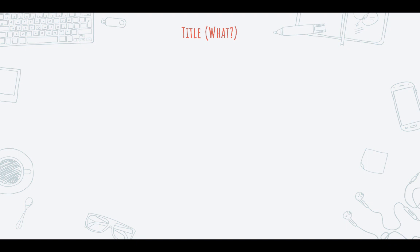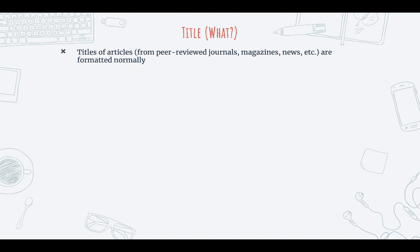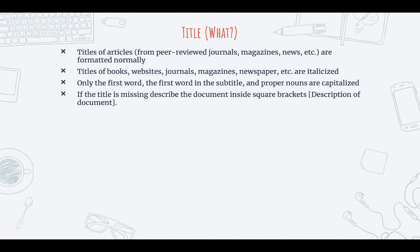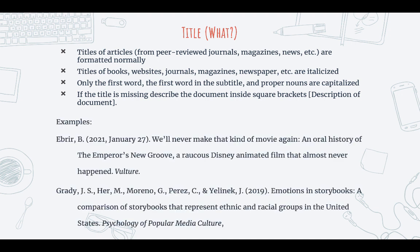For the next part of the citation we have the title. Titles of articles from peer-reviewed journals, magazines, news, etc. are formatted normally. Titles of books, websites, journals, magazines, newspapers, etc. are italicized. Only the first word, the first word in the subtitle, and proper nouns are capitalized. If the title is missing, describe the document inside square brackets. Here are examples of how to format titles from the website article. You can see the title of the article itself is formatted like a sentence, and the name of the website — Vulture — is italicized. For the academic article, the title of the article is again formatted normally like a sentence, and the name of the journal, Psychology of Popular Media Culture, is italicized.